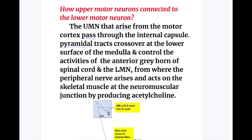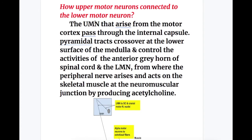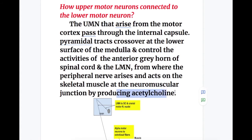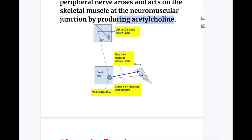How is the upper motor neuron connected to the lower motor neuron? The upper motor neurons arising from the motor cortex pass through the internal capsule. The pyramidal tract crosses over at the lower surface of the medulla and controls the anterior horn of the spinal cord and the lower motor neurons, from which peripheral nerves arise and act on skeletal muscle at the neuromuscular junction by producing acetylcholine. The extrapyramidal tract does not cross here and controls and inhibits the anterior gray horn and the cranial nerve nuclei.